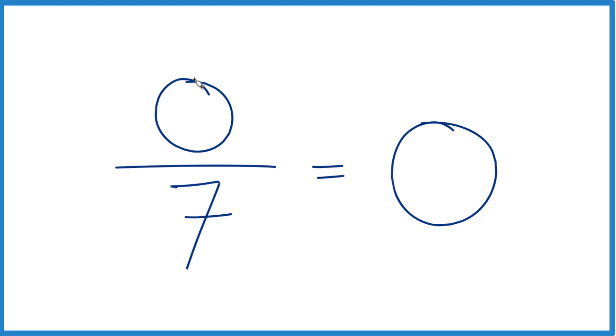Think of it this way, you have 0 dollars, and you want to divide that among 7 friends. How many dollars does each person get? They get 0 dollars.